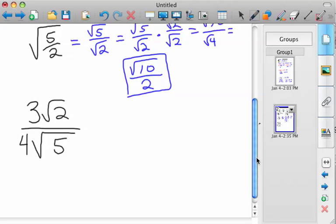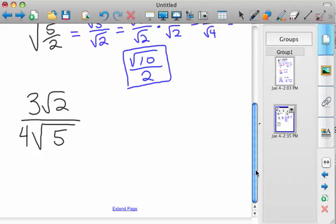Okay, so what about this last one here? In this case, we've got 4 root 5 on the bottom. It's already split into 2. I don't need to multiply by 4 root 5, because 4 is already rational. So all I'm going to do is multiply by the radical, which is root 5.